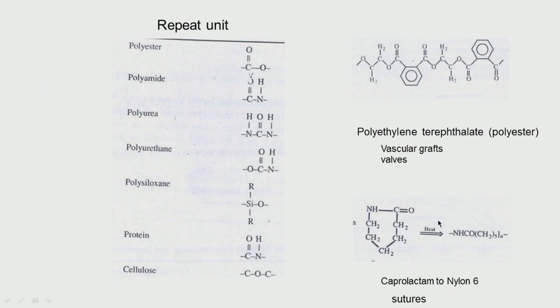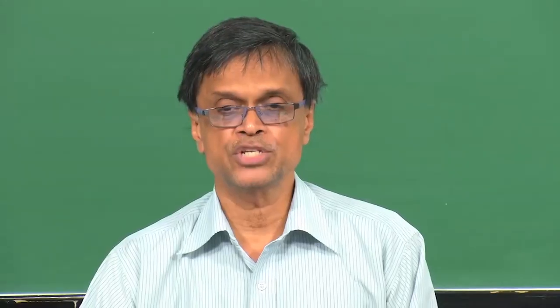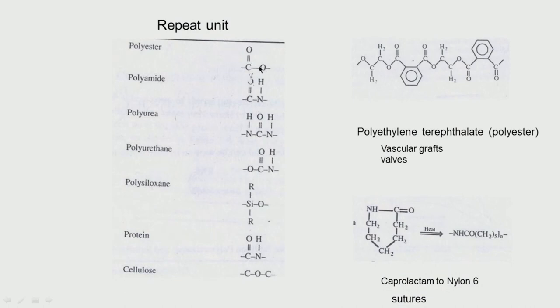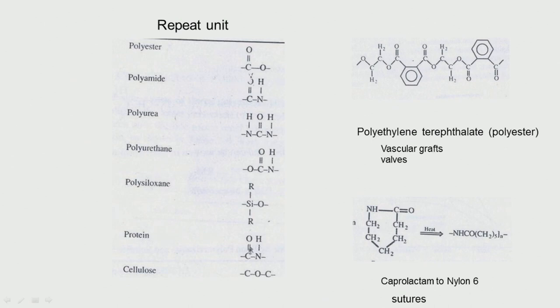In a polymer, the same repeat unit gets repeated hundreds or thousands of times. Depending upon the number of repeat units, the molecular weight also changes. For example, polyester has this repeat unit with a C=O and O — this is called the ester bond, which esterase-type enzymes can degrade. Polyamide has C=O, NH — and note that the amide bond in proteins also has C=O and NH with aliphatic or other functional groups.